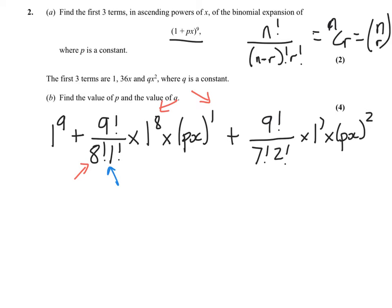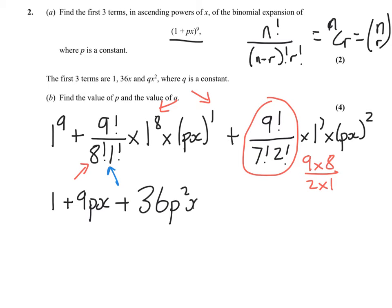Should be able to simplify that fairly easily. So 1 to the power 9 is 1. This becomes 9, so 9 times 1 times px, so it just becomes 9px. And then this bit here, it simplifies to 9 times 8 over 2 times 1, which is essentially 9 times 4, which is 36.